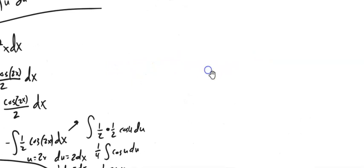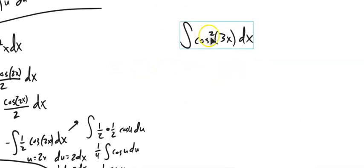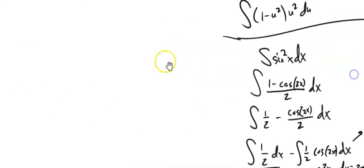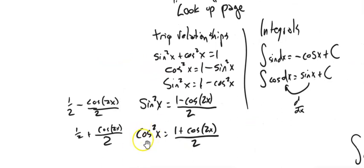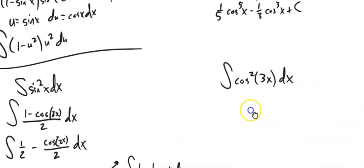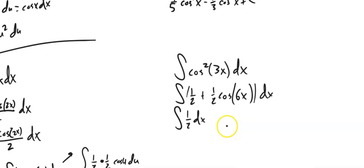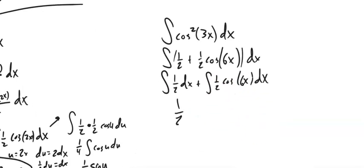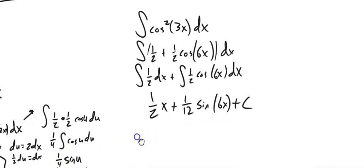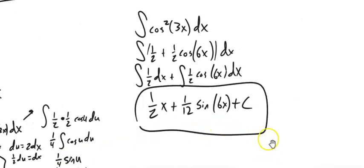Let's do cosine squared — it's an even power, so I can't pull out a singleton and bring in a sine dx for substitution. I'll use the double angle formula: cosine squared is one plus cosine(2x) over two. For cosine squared of 3x, this becomes one plus cosine(6x) over two. Breaking it up: one half x plus one twelfth sine(6x) plus C.